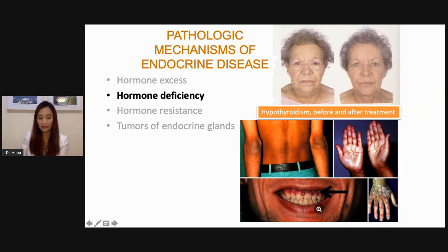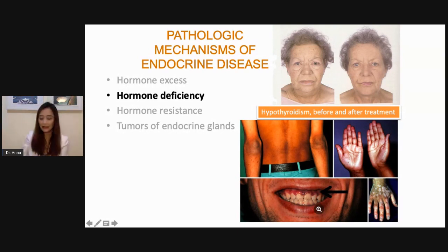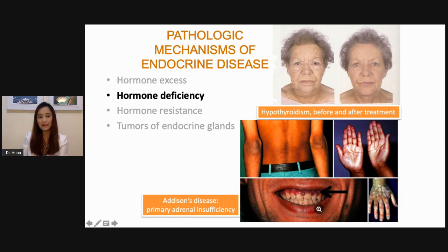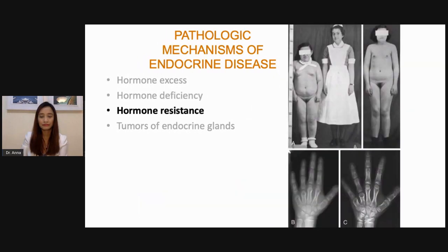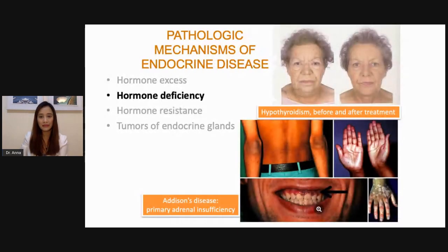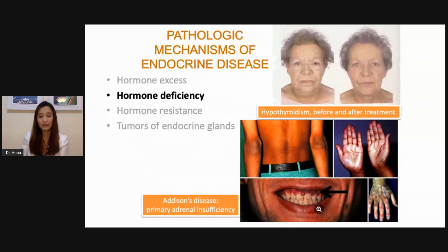You can see mucocutaneous hyperpigmentation in these areas, in the palms, and some patients also have hypopigmentation or vitiligo. This is your classic Addison's disease, or primary adrenal insufficiency. Even without doing any biochemical tests, you would already have an idea of what the patient has just by looking at the patient from head to toe and taking a thorough history, which will guide you in eventually doing your biochemical testing.